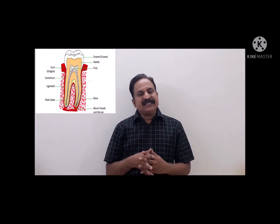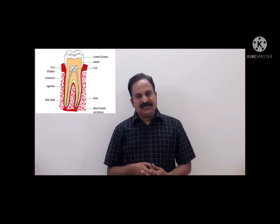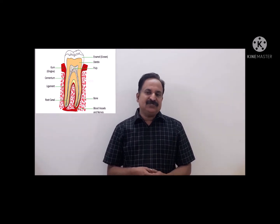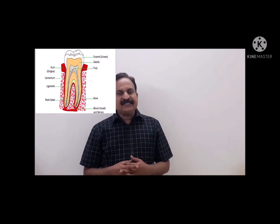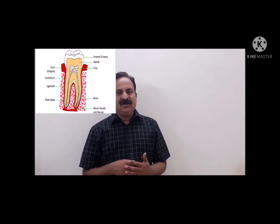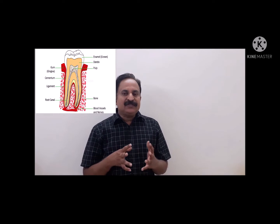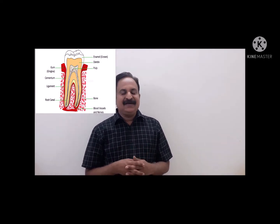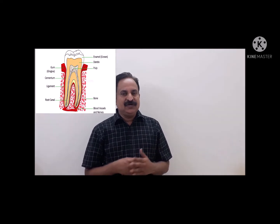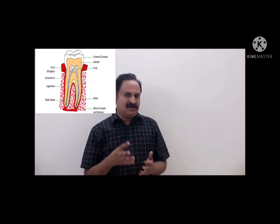The crown is the exposed part of the tooth and is situated above the root. In old age, it is generally subjected to wear. The root is the hidden part in the gum, anchored in the socket or alveolus of the jawbone. The tooth encloses a pulp cavity that contains blood vessels, nerves, and connective tissue. The junction of crown and root is called the neck.